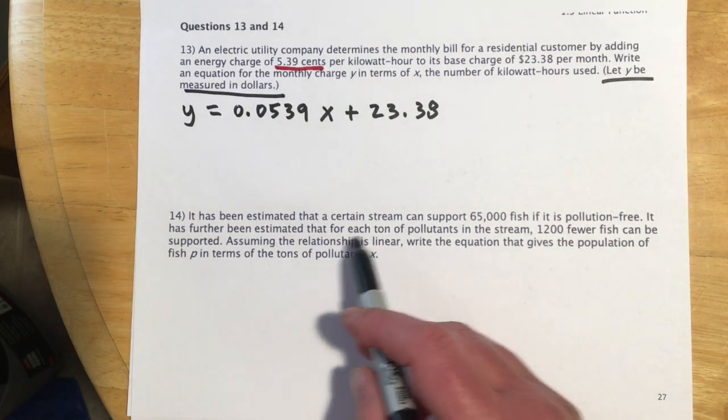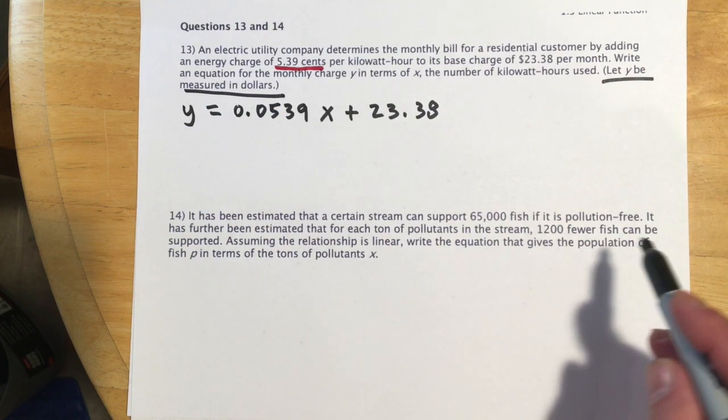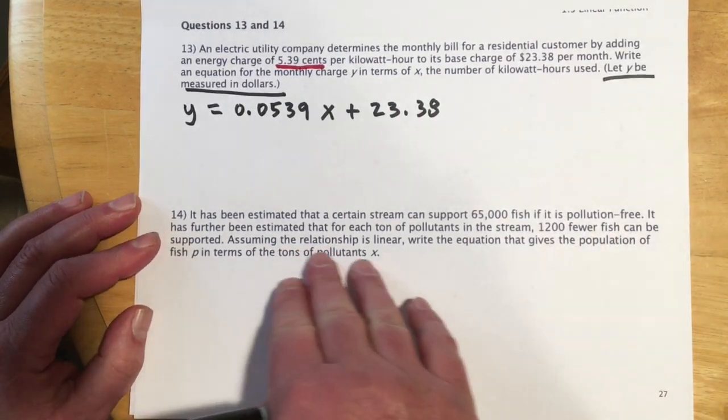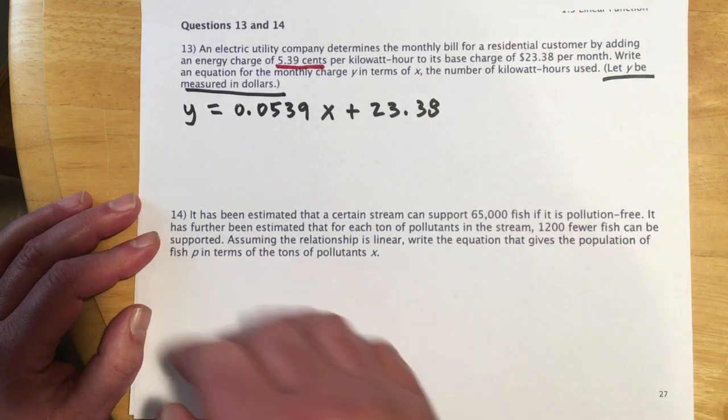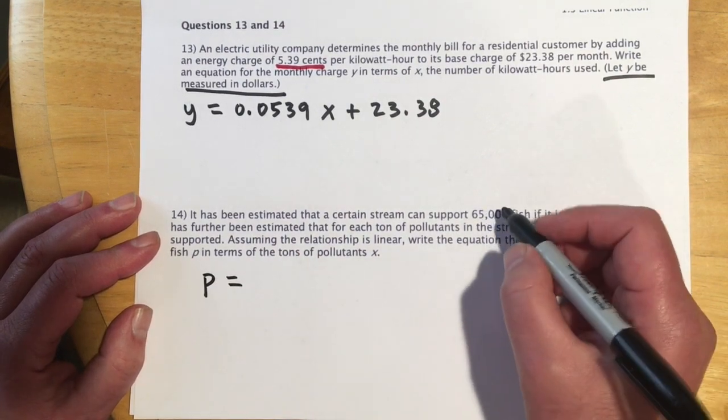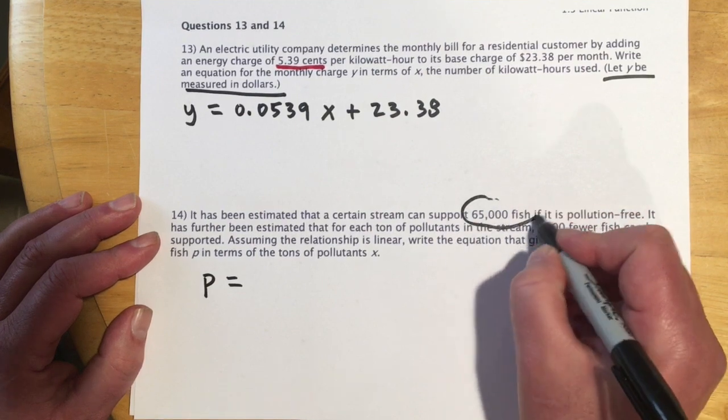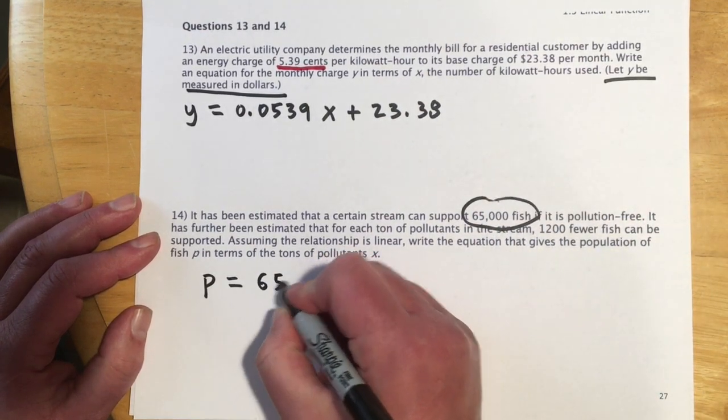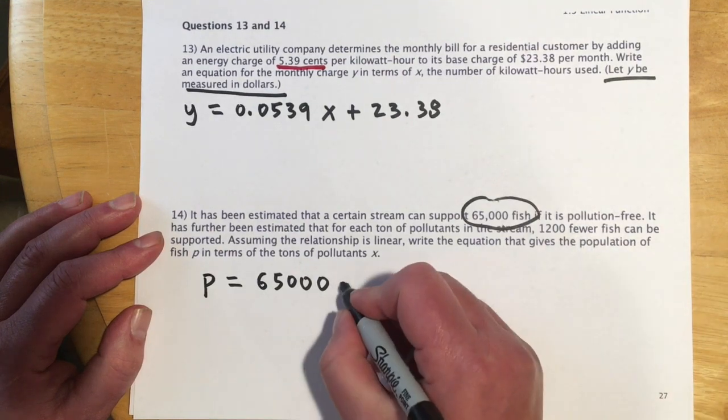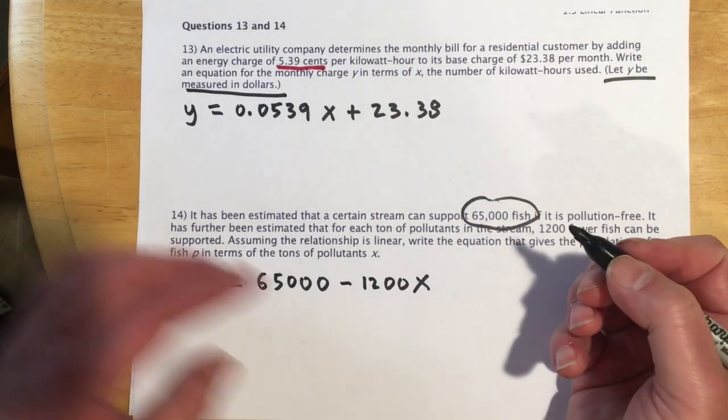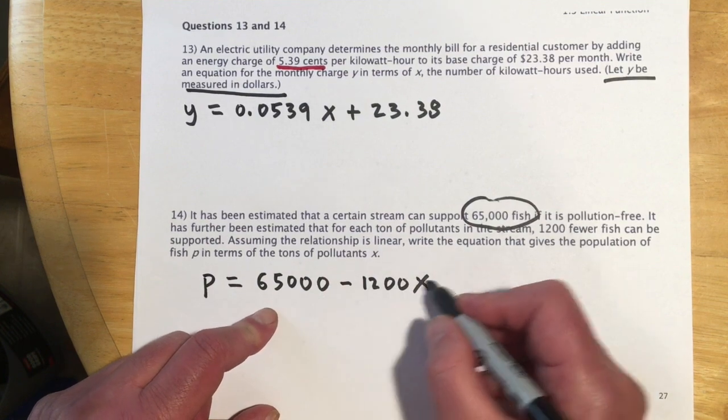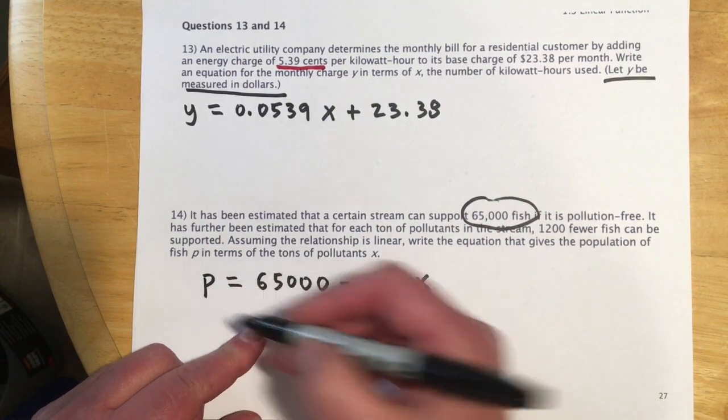Number 14, it's been estimated that a certain stream can support 65,000 fish if it's pollution-free. It has further been estimated that for each ton of pollutants in the stream, 1,200 fish can be supported. Assume the relationship is linear. Write an equation that gives the population of fish P in terms of pollutants x. So we've got P equals, so this is our, if there's nothing, if there's no pollution in there, we've got 65,000 fish. But then for every ton of pollutants, we're going to have this many fewer fish that can be supported. So 1,200 times x. We could write it the other way too. This one just sort of feels more like it should go that order. So this is our total fish minus 1,200 for each ton of pollutants, and that would give us our new population.